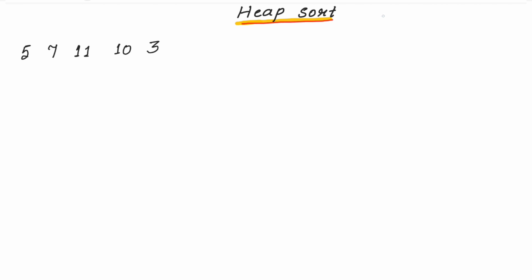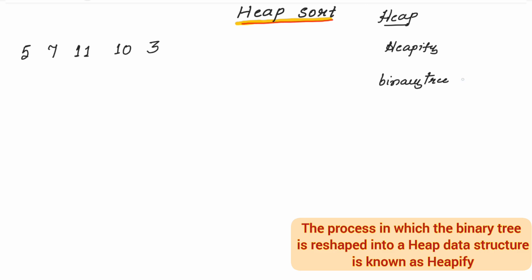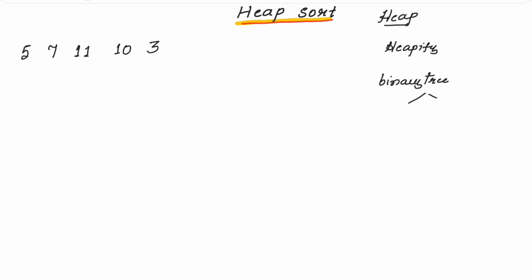I have taken an array with 5 elements which has to get sorted. Heap sort algorithm is based on the data structure called heap, and you will be using the heapify method in order to sort the elements. Heapify method is used to convert a binary tree — rearranging the elements into a min heap or max heap.